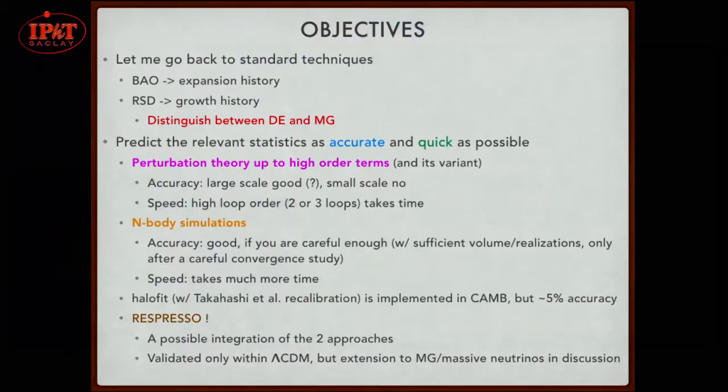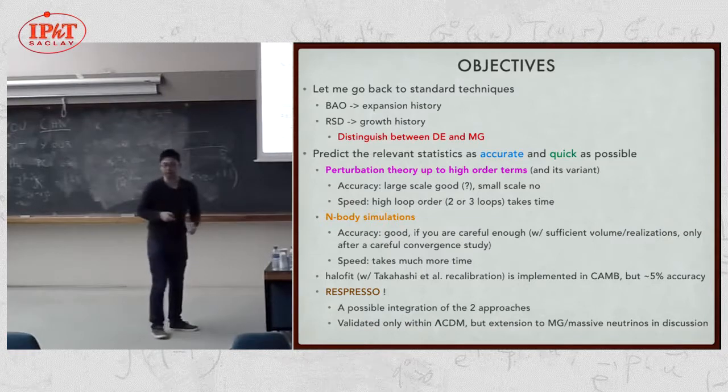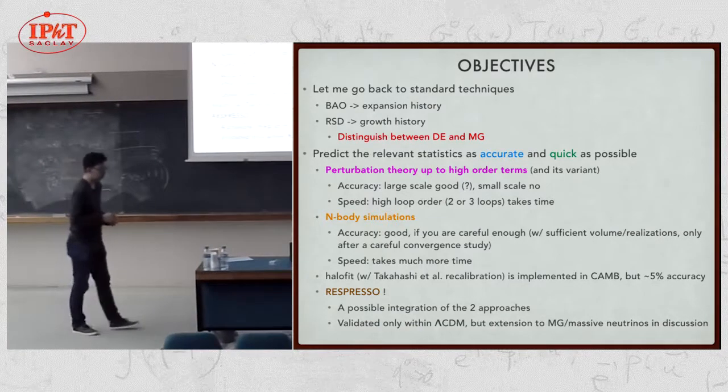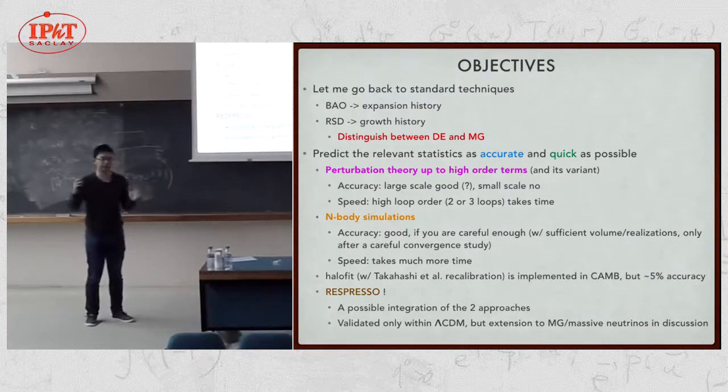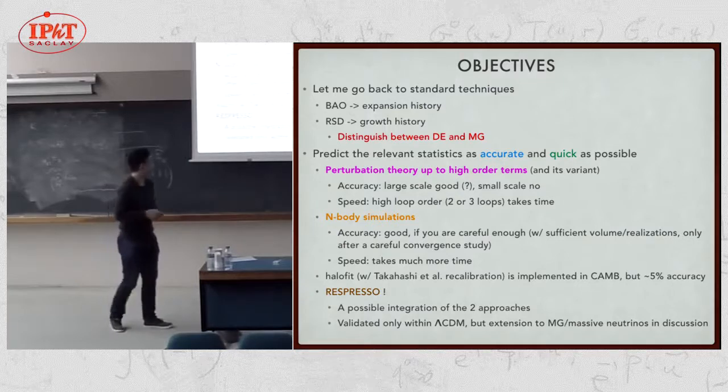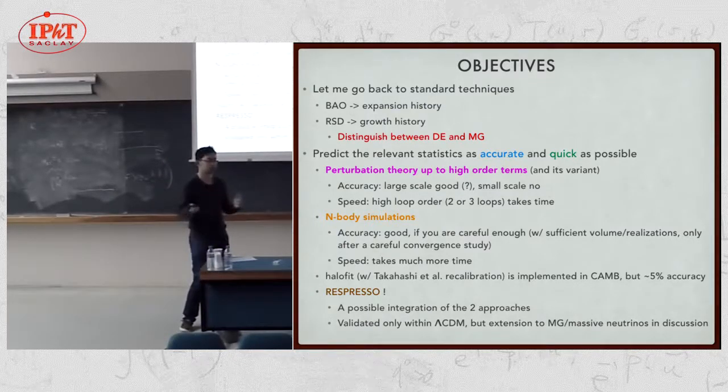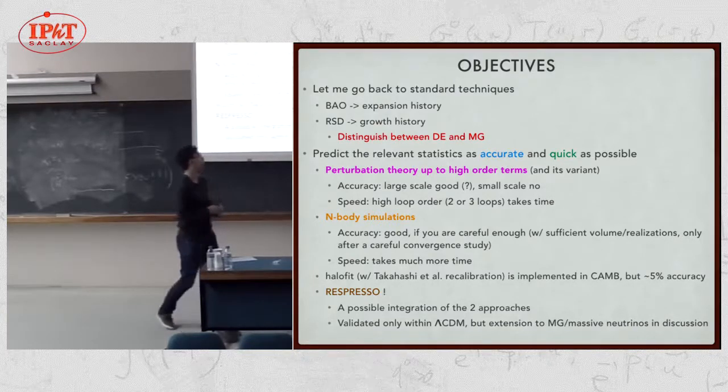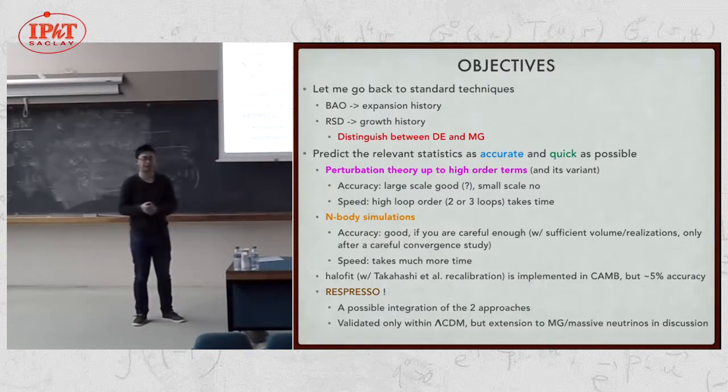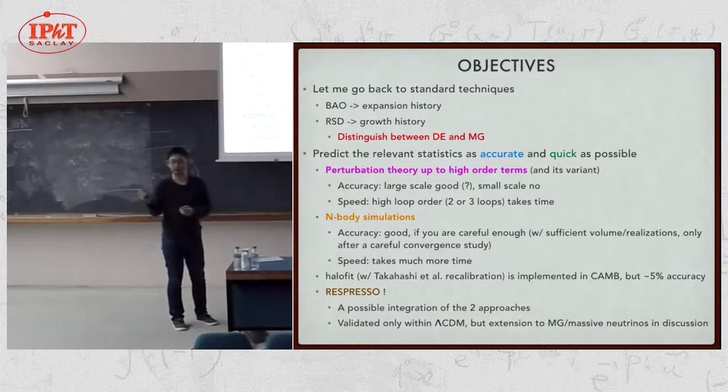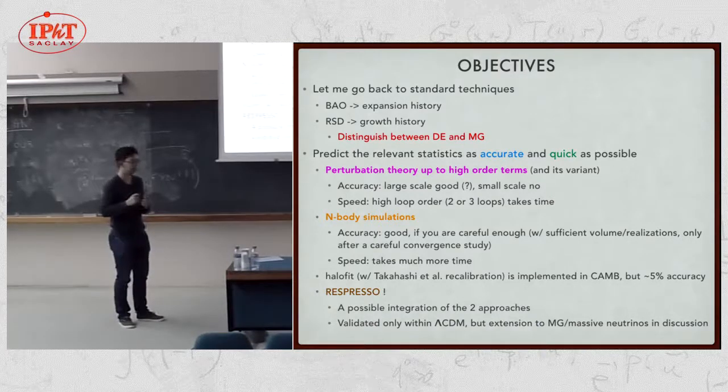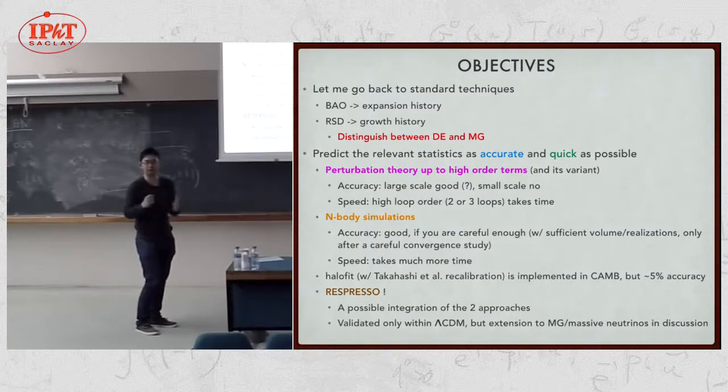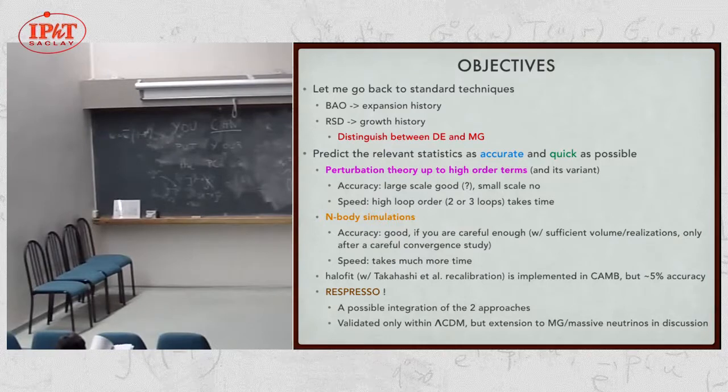What I want to do is predict the large-scale structure observables very accurately and quickly. This is because, needless to say, big survey programs are ongoing and planned, and the statistical error level will get higher and higher. We need a very good model to face such future big data. Also, typically one has model parameters, and one has to run MCMC chains to explore your parameter space and decide which parameter set best describes the observed universe. For that, we need to predict things very quickly.